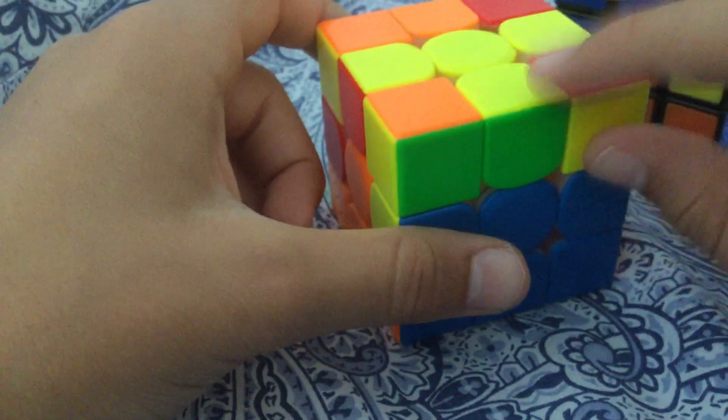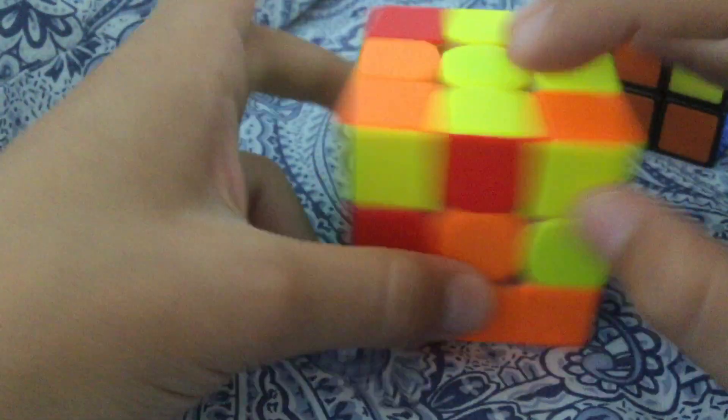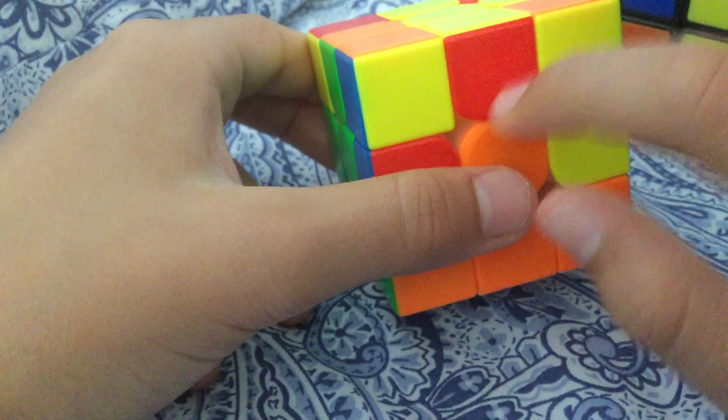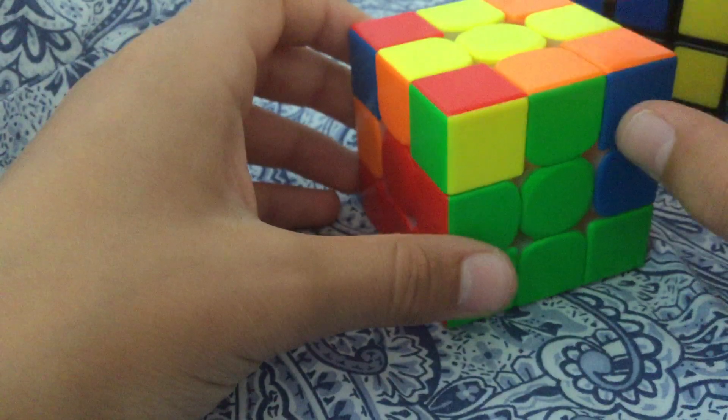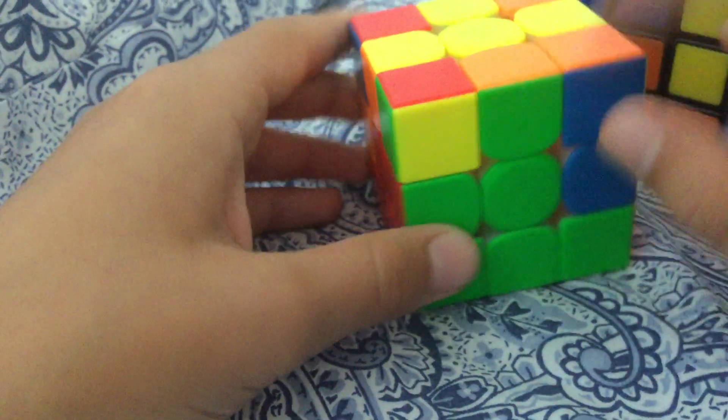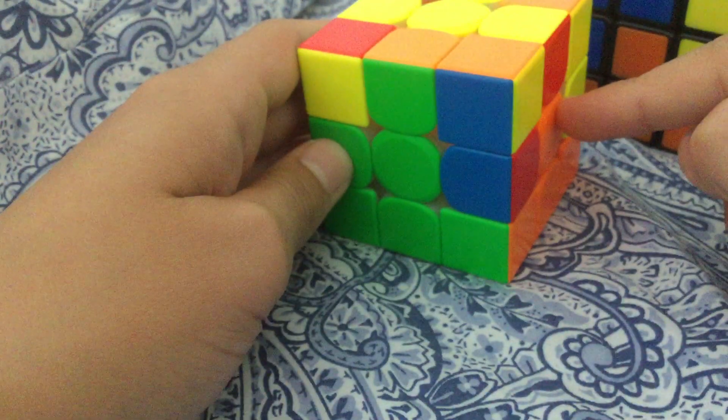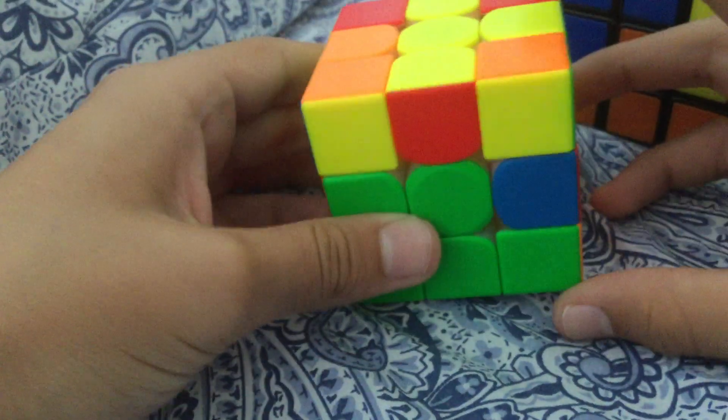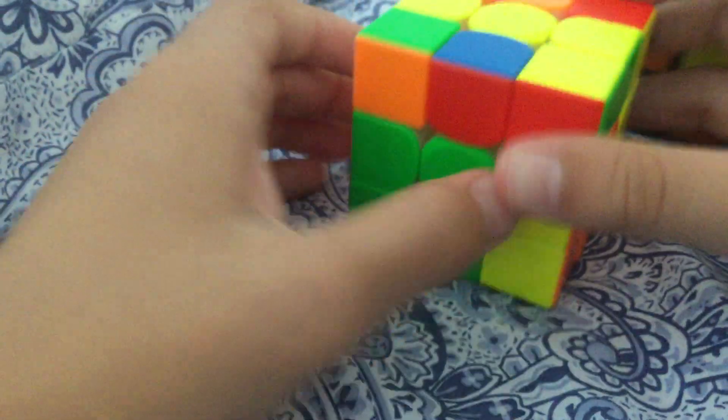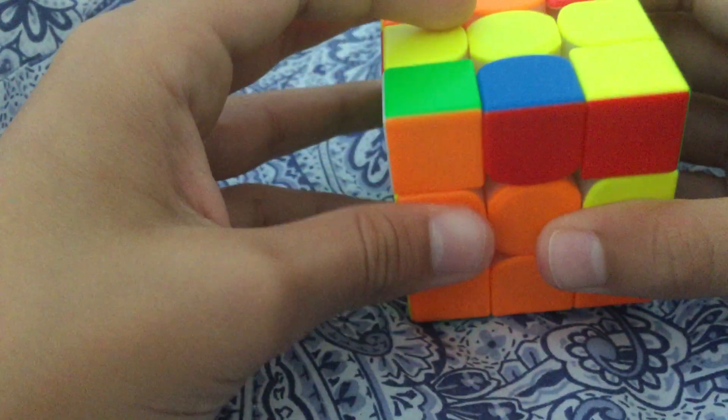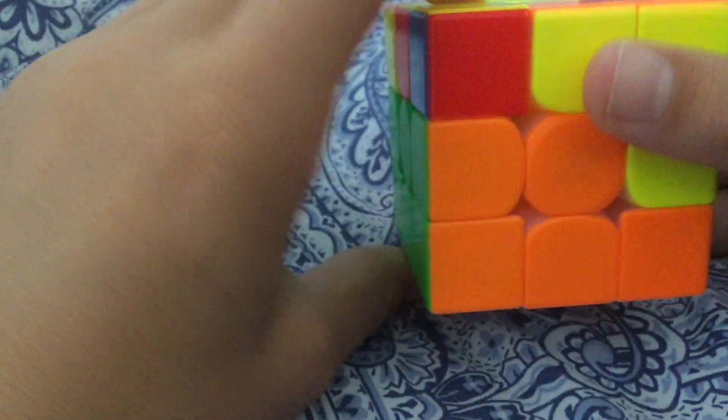So you don't want any yellows. If it's yellow on the top or yellow on this color, you're not gonna do it with that color. This is already matched with the center, orange is that color. Face it away, R U' R'. Match this back to its orange center, L' U' L.